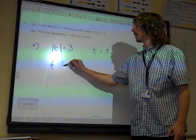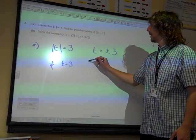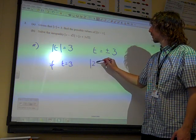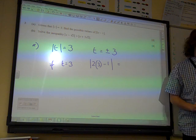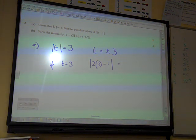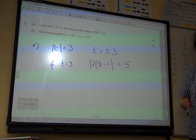So if t equals plus 3, then the modulus of 2 lots of 3 minus 1, that is equal to 5.